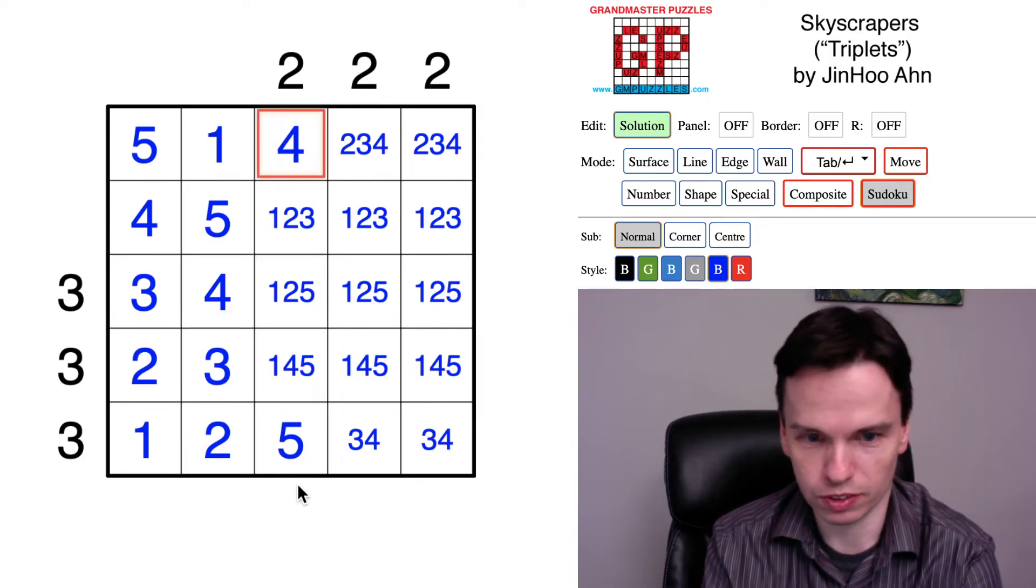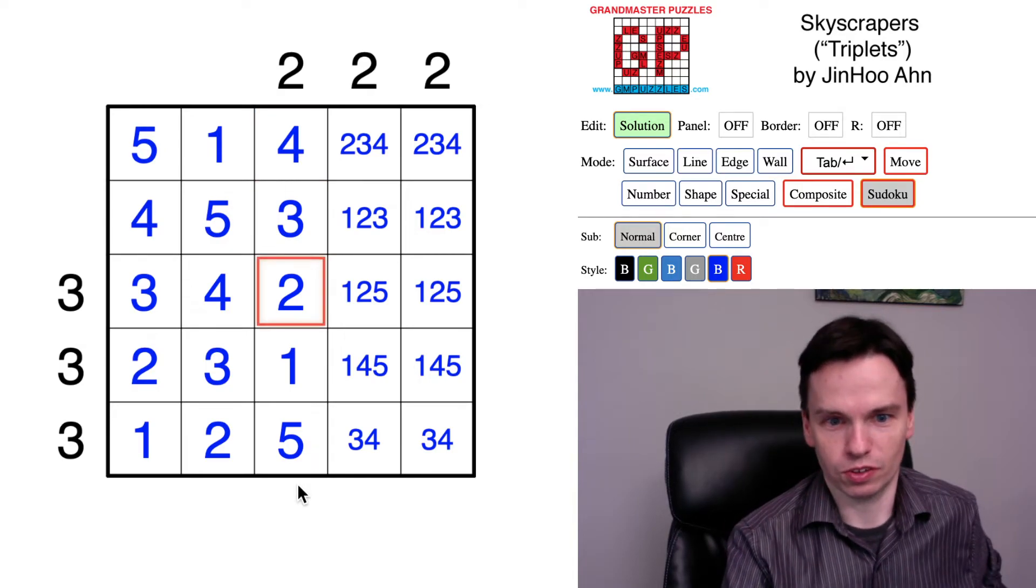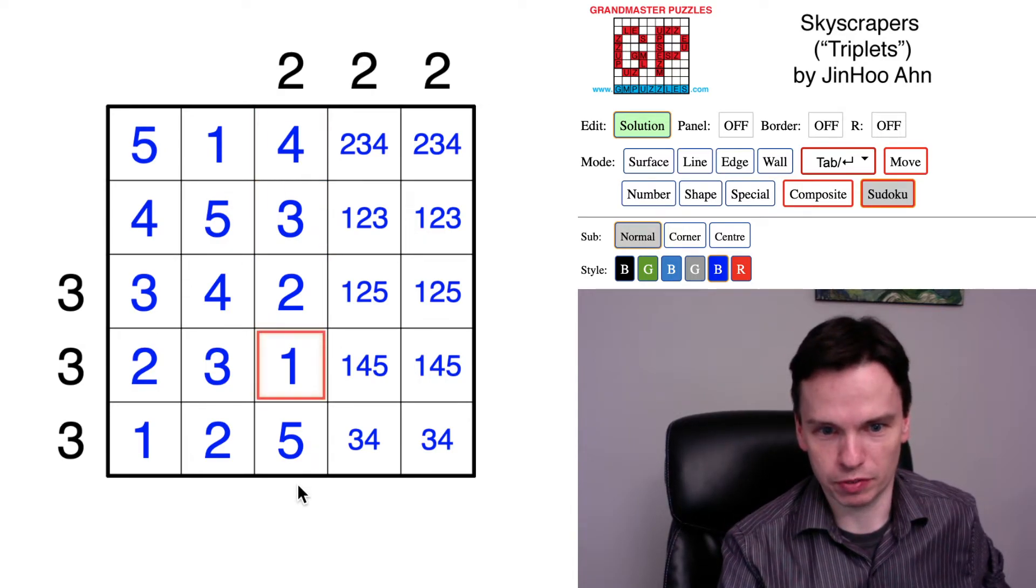That now means that the four is at the top of this column. And again, if we work up the stack, this whole shoot is going to be five followed by four, three, two, one.